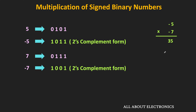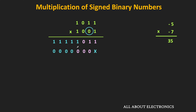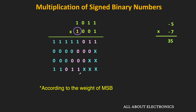In the multiplication, starting from the LSB of the multiplier (-7 = 1001), the LSB is 1, so the first partial product equals the multiplicand 1011, with the sign bit extended to 8 bits. The second bit is 0, so the next partial product is 0. The third bit is also 0, so that partial product is also 0. The MSB is 1, so the last partial product equals the multiplicand, left-shifted according to its weight, with the sign bit extended to 8 bits.